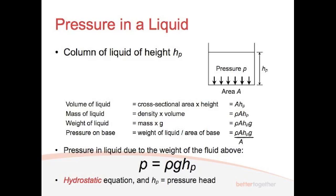And then, obviously, the pressure on the base is the force divided by the area. And so we've got the force, which is the weight, divided by the area, which is A, and so you've got rho, A, H, G, divided by A. Obviously, the A's will cancel, and you end up with the pressure in the liquid due to the weight of the fluid above is rho, G, H.